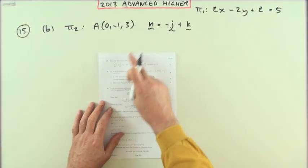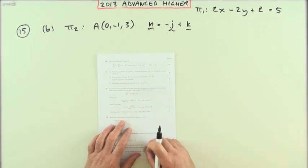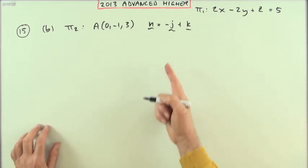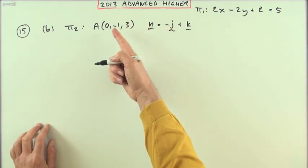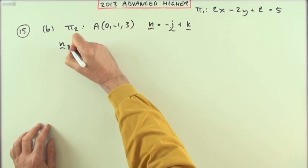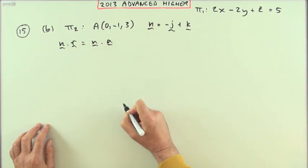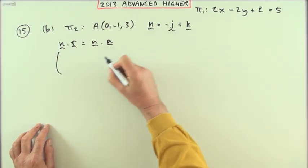In part B, you have to just do the same thing again for two marks. This time you're given the normal vector to the plane, so it's the same as before. If that's the normal vector to the plane and that's a point on it, then I know that n dot any point on it will be n dot any given point.